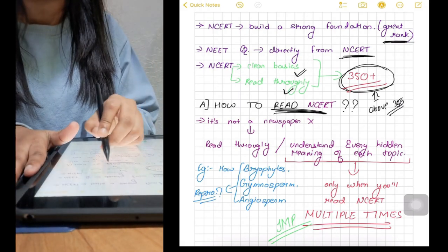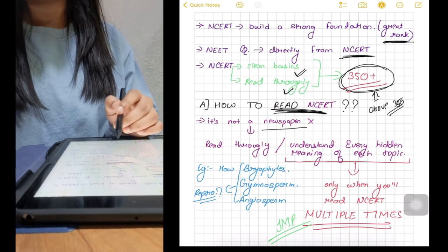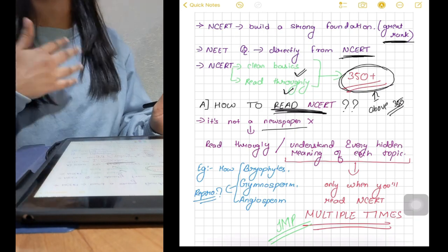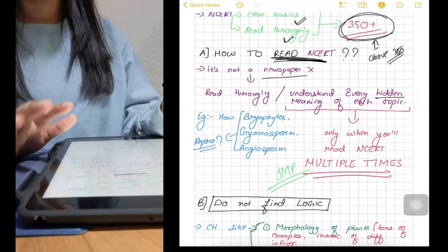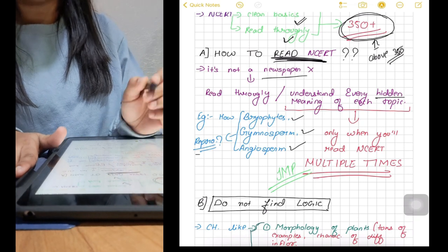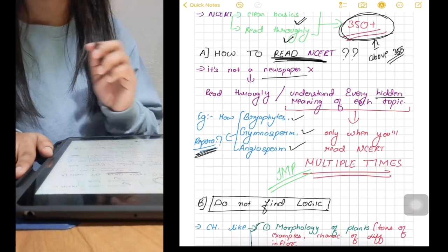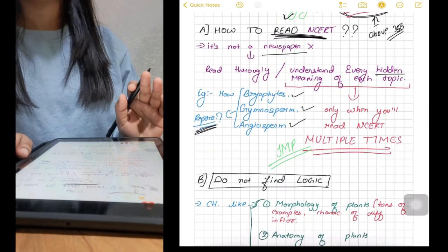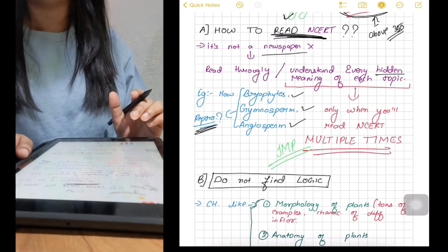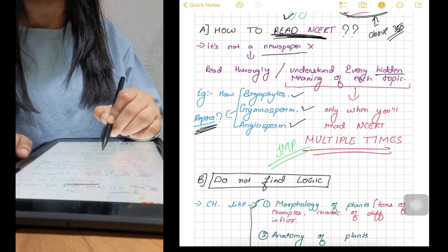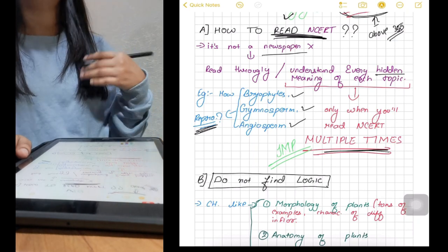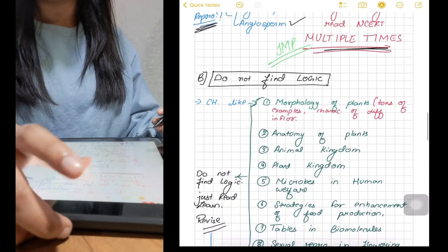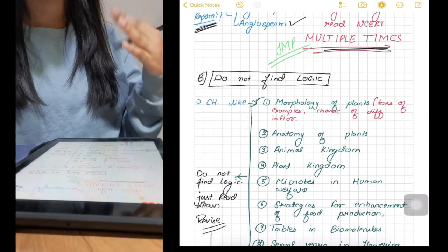Now the thing is how to read NCRT. NCRT is not a newspaper that you can read and move on. NCRT is loaded with concepts that you'll have to unreveal along the way. For example, you have to understand how bryophytes, gymnosperm and angiosperm reproduce. You can't just read and not soak up the essence of these concepts and then hope to answer the questions correctly. This will happen only if you read NCRT multiple times. Every time when you read a concept again and again, you'll get to know something new about it.